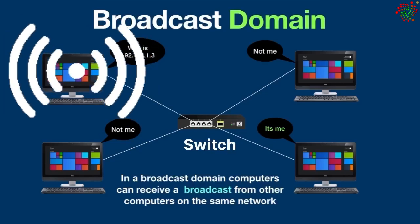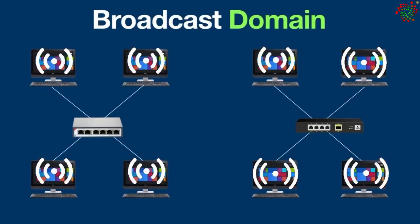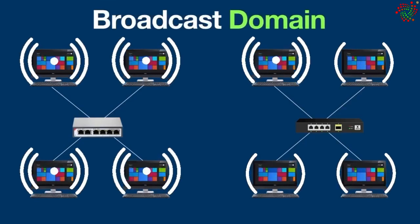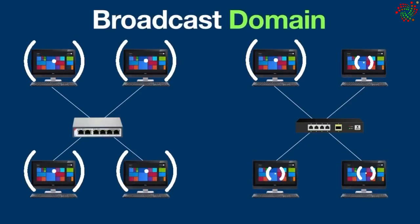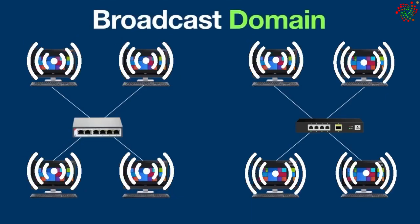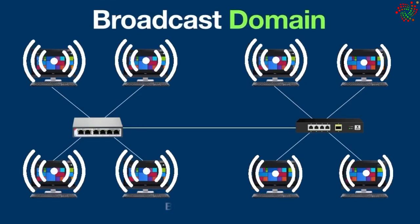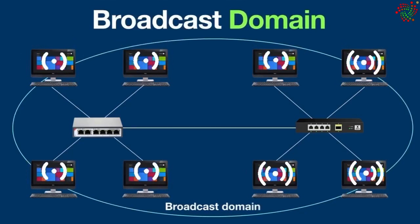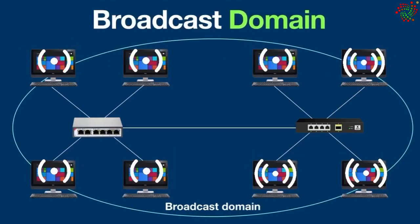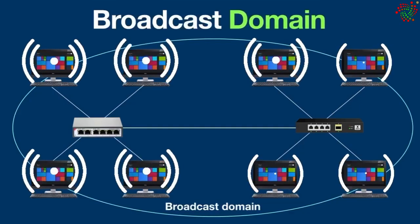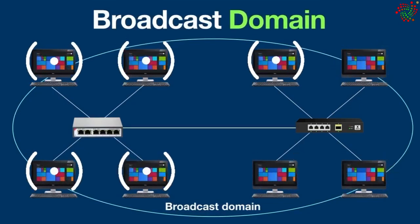It doesn't make a difference because both will forward the broadcast. Here we have a local area network where four devices are connected to a hub and four devices are connected to a switch, and the hub and switch are connected to each other. This network is one big broadcast domain — every device on this network can receive broadcast from every other device, because hubs and switches always forward broadcast.